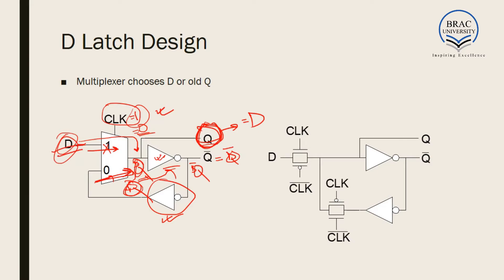This is a basic latch design. This latch design can also be created with the help of transmission gates. We connect clock and clock-bar here. When clock is equal to one, this gate remains on and becomes short-circuited, while the other gate remains off and becomes open-circuited. Similarly, when clock is zero, one gate is open-circuited and the other is short-circuited.